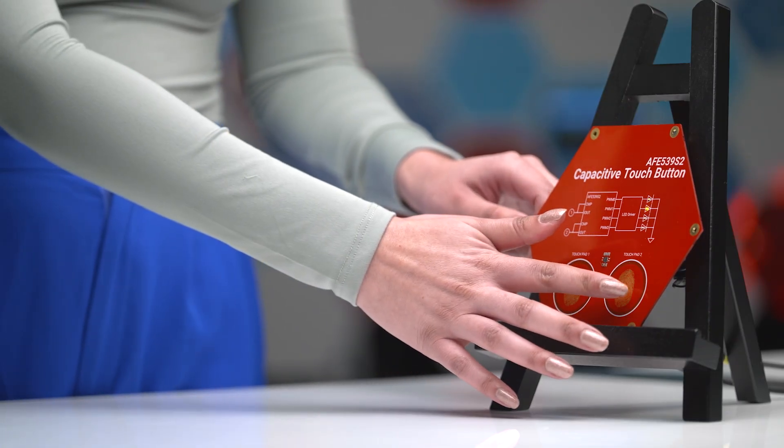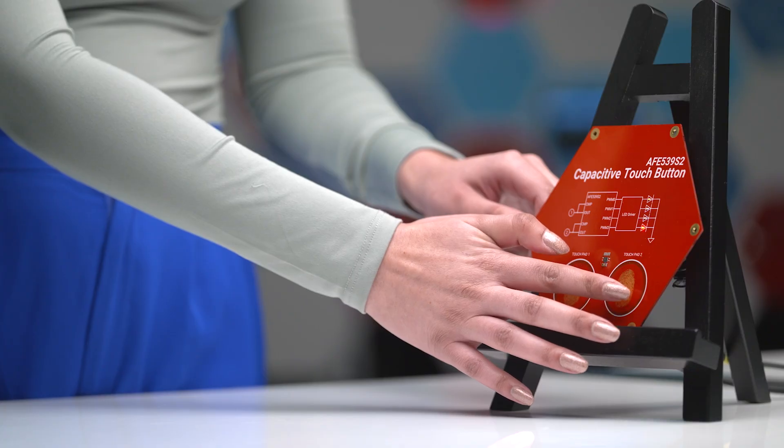Once the touch is detected, the internal state machine goes through the debouncing logic to ensure the accuracy of the touch. As we tap in this plate, the device registers the touch and cycles between the different LED colors.